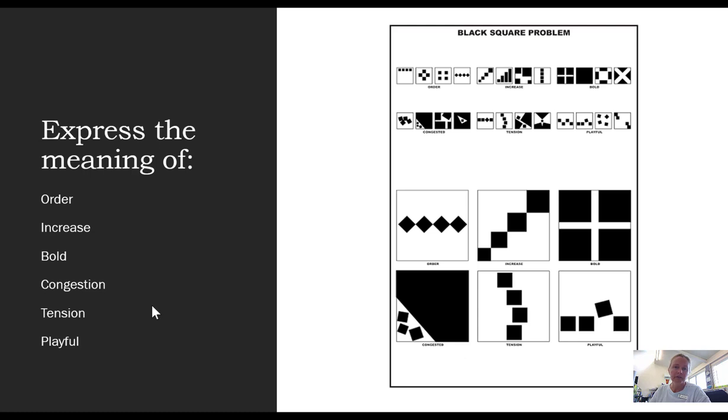This is a little exercise we can use to practice expressing the meaning of some of the elements and principles of design. So in this black square problem, we are given the task of just by using four black squares, trying to create a composition that might visually represent the word. So you can see some examples of order, some examples of increase, examples of boldness, congestion, tension, and playfulness.